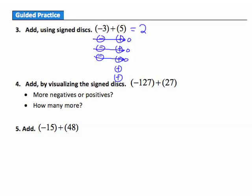Question 4: add by visualizing signed disks. Not possible to draw all the disks, so we ask two questions. More negatives or more positives? Many more negatives. How many more? I have 127 negatives and 27 positives — that means 100 more negatives, so the answer is negative 100.